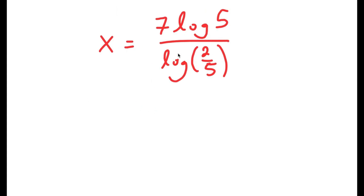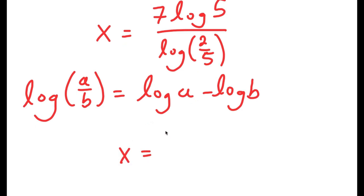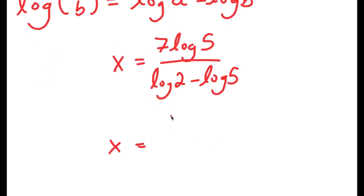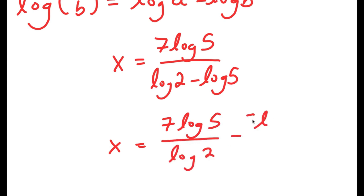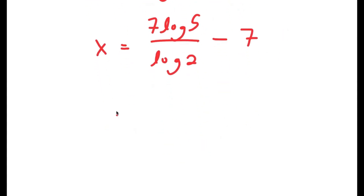We have our answer here, but there is a way to simplify it more. If I have something in the form log a over b, this is equal to log a minus log b. So log 2 over 5 equals log 2 minus log 5. Simplifying, I get 7 times log 5 over log 2 minus log 5, which is the same thing as 7 times log base 2 of 5, minus 7.